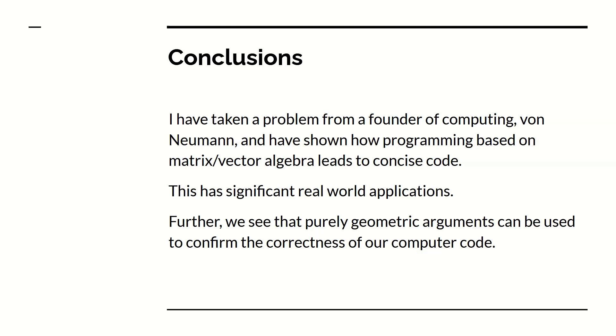What I've done is I've taken a problem from the founder of computing, von Neumann. And I've shown how programming based on matrix vector algebra leads to a very concise code. It's just a few lines of code to work out the maximum rate of growth of the economy. And this has significant real-world applications. The Chinese use balanced growth theory in their five-year plans. And further, you can show that purely geometric arguments can be used to confirm the correctness of your computer code, if you are dealing with areas where the computer code maps onto a geometric space like linear algebra.